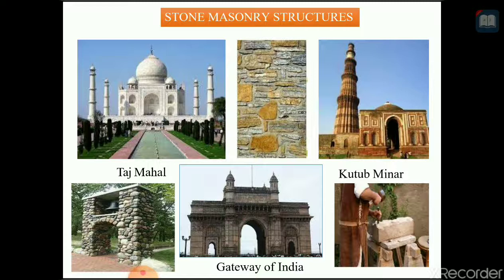If you observe the first picture, which is nothing but the Taj Mahal, the third picture is the Qutub Minar and the fifth picture is the Gateway of India. These structures are all made up of stone masonry. The last picture, number 6, shows the dressing of stone being carried out. Stone chips remaining after dressing are used in walls as in picture number 2.